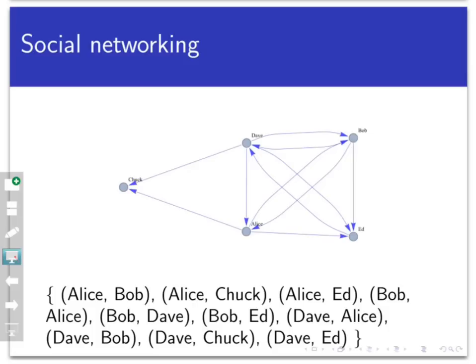So what we have here is a set of ordered pairs. If we let P be the set consisting of people in this network—that would be Alice, Bob, Chuck, Dave, and Ed—